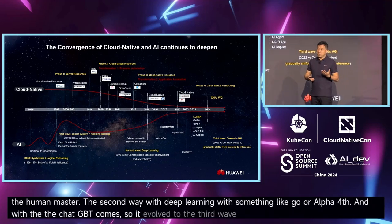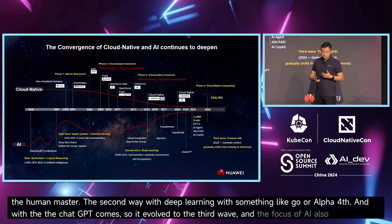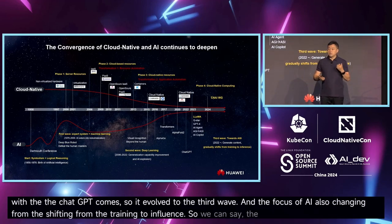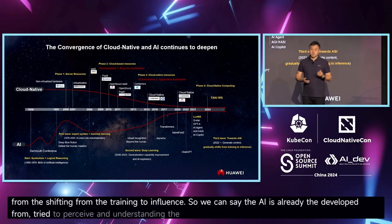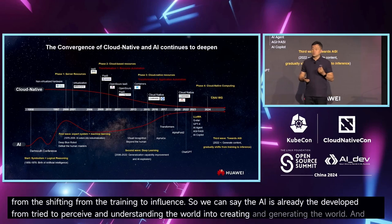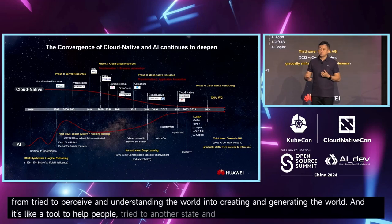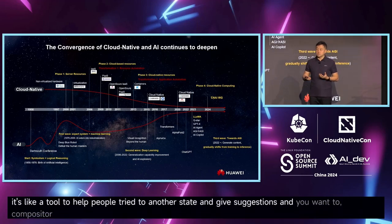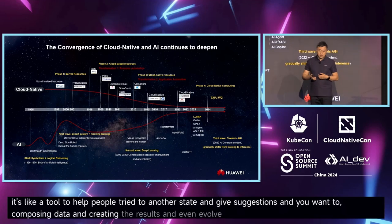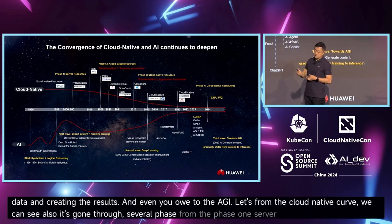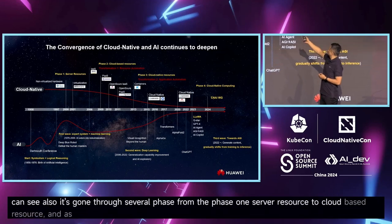The focus of AI is also shifting from training to inference. We can see AI has already developed from trying to perceive and understand the world, into creating and generating the world. It evolved from a tool to help people analyze data and give suggestions, to composing data and creating results, and even toward AGI. From the cloud-native curve, we can also see it has gone through several phases — from server resource, to cloud-based resource, and then cloud-native resource.